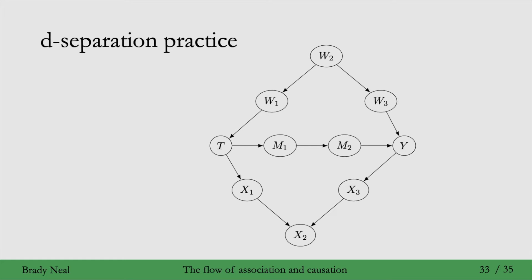The answer is no. For example, there is an unblocked path from T to Y going through M1 and M2. What about if we were to condition on M1? Then are T and Y d-separated? The answer is still no, because there is an unblocked path going from T to W1 to W2 to W3 to Y.